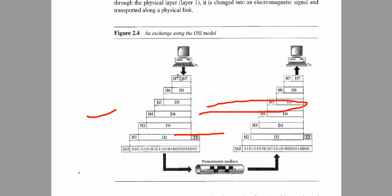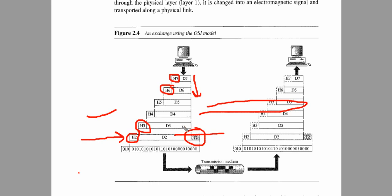For example, layer 7 embeds its header into the data and transmits the whole message to layer 6, and so on down. When we reach the data link layer, it adds both a header (containing source and destination information) and a trailer. The trailer is used for error control and flow control. So basically, every layer embeds its own information and transmits the whole package to the next layer below.